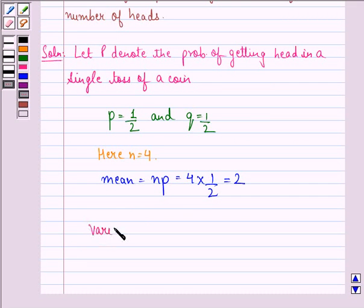And variance, that is npq, is equal to 4 times 1/2 times 1/2, that is equal to 1.